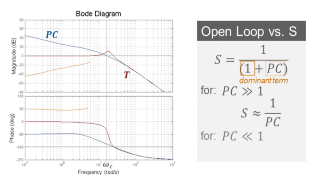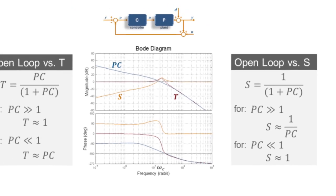When PC is much less than 1, S will approximate 1 over 1, so both the magnitude and the phase of S will be approximately 0 on the Bode plot for the high-frequency region. Once again, the actual trace of S follows our asymptotic approximation quite closely.